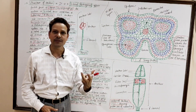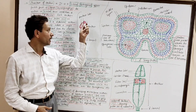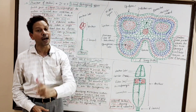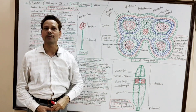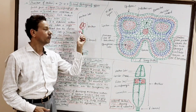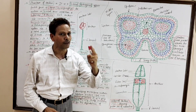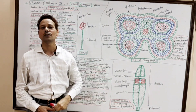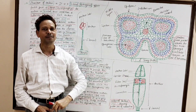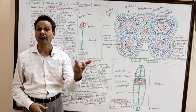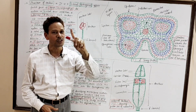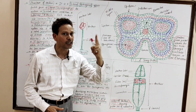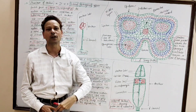Dear students, the anther is the fertile part of a stamen. It is a microsporophyll because it is a modification of a leaf that produces pollen grains or microspores. As it represents the male reproductive organ of a flower, it is collectively part of the androecium. Generally, each anther consists of two lobes — the condition is dithecous.